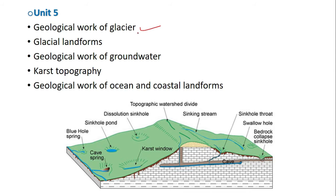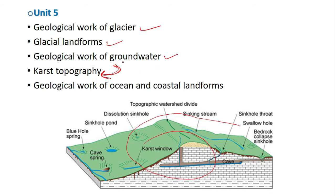Unit five covers the geological work of glaciers as a geomorphic agent and glacial landforms. Then we have the geological work of groundwater and karst topography — a type of landform showing the work of groundwater. Finally, we have the geological work of the ocean and coastal landforms. With this we are done with the geodynamics and geomorphology portion.